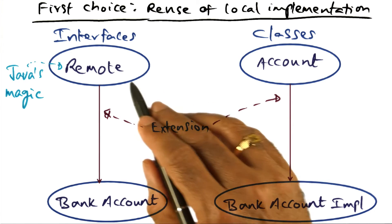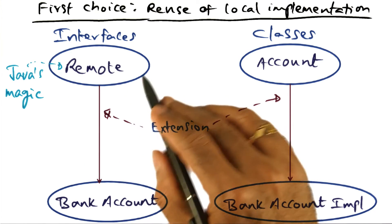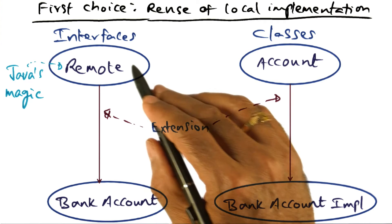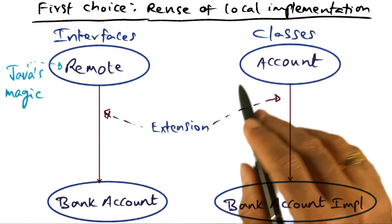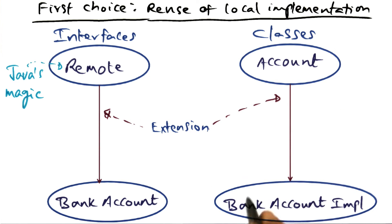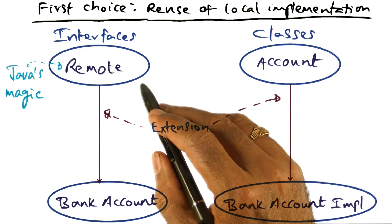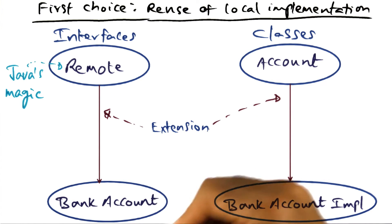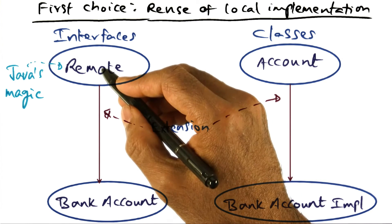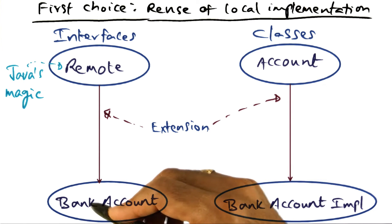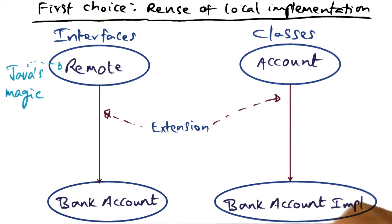Using that built-in remote class available in the distributed object model of Java, she makes the methods in the BankAccount class that she created visible on the network. As a result, she has created this interface derived from the remote interface — an interface for her BankAccount object.